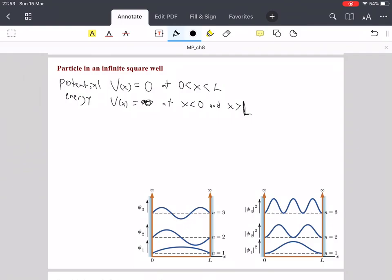So notice here that there's no time dependence in the potential energy V, which is why we can use the time independent Schrödinger equation.